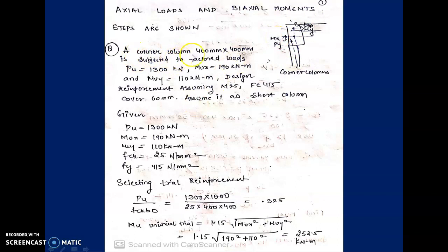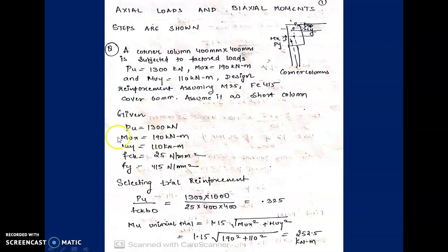Question: A corner column 400×400 mm subjected to factored load 1300 kN, moment Mux = 190 kN·m and Muy = 110 kN·m. Design the reinforcement assuming fck = M25, fy = 415, cover = 60 mm. It is given that it is a short column, so we need not check the slenderness.